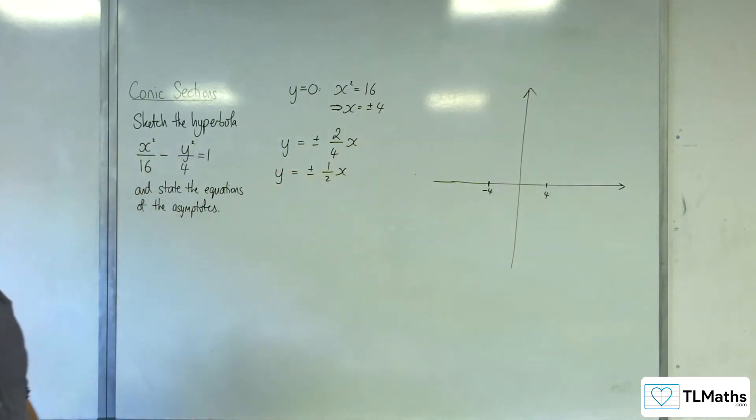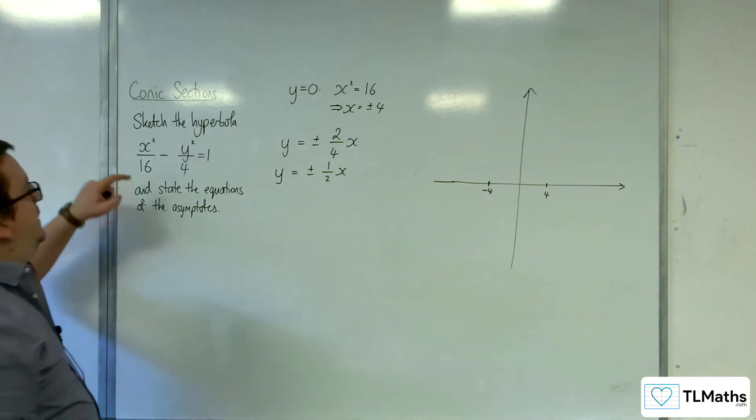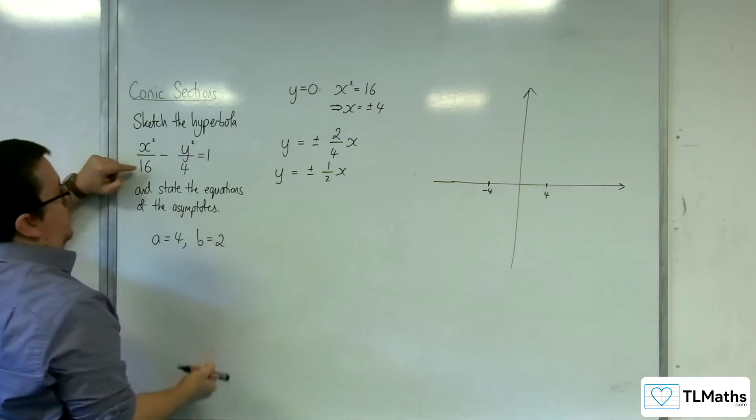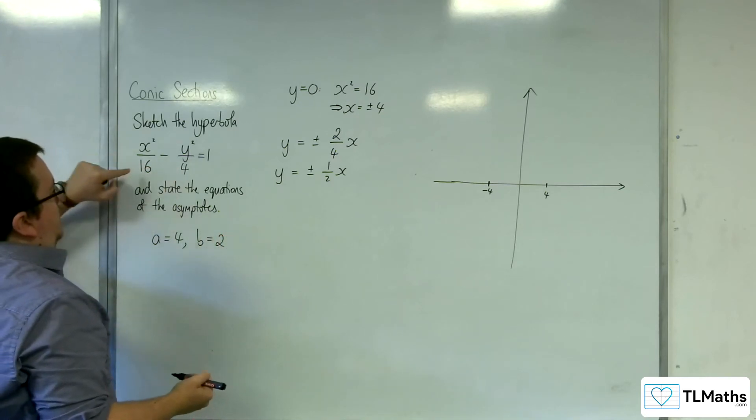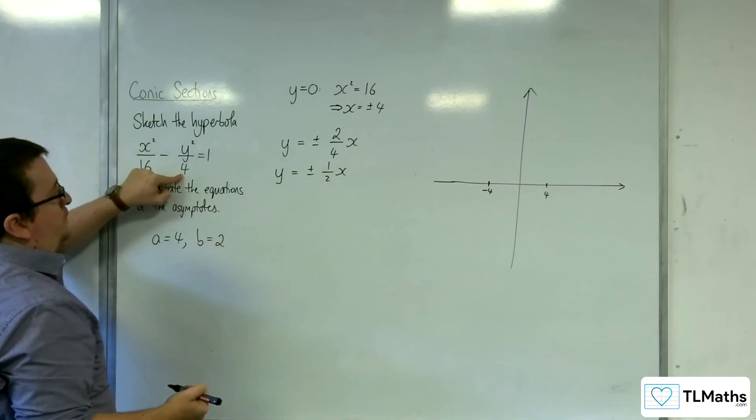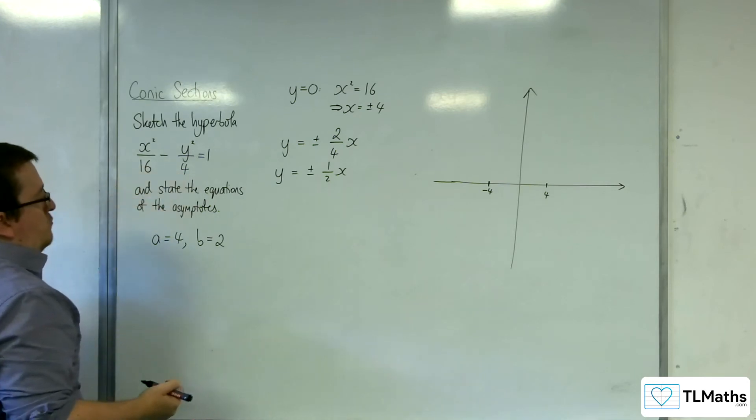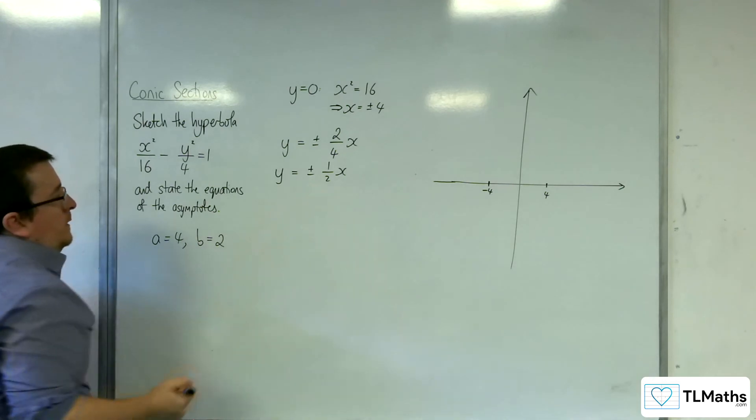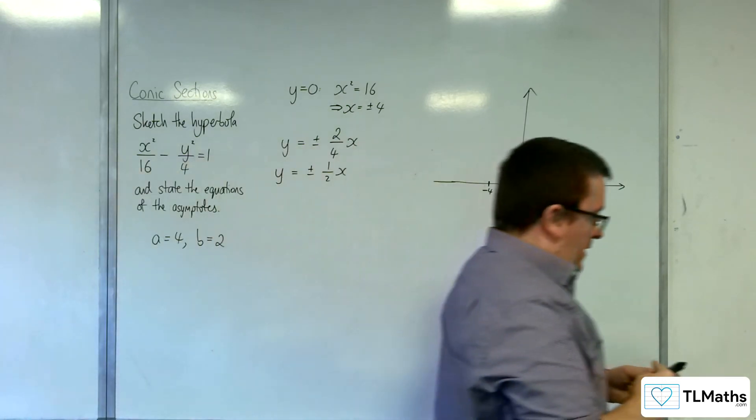Recognising here that the A is 4 and the B is 2, because it's the square root of those values there. And so then you can go, right, it's B over A, so 2 over 4, which is the half. So plus or minus one half x.